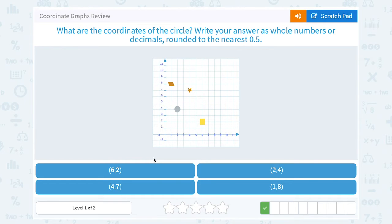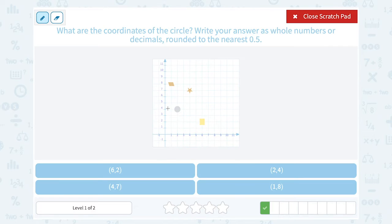What are the coordinates of the circle? Write your answer as whole numbers or decimals rounded to the nearest 0.5. Okay, well the circle is my point right here. And it looks like the middle of that circle is right through the edge of the graph. So I should be able to give a whole number answer. Okay, well I want to write my answer as x, then y.